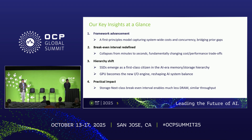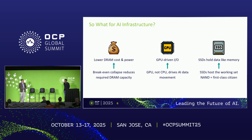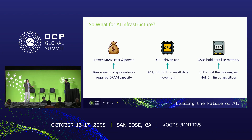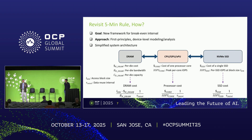Practically, we can achieve the same throughput with much less DRAM. That means lower cost, lower power, and data movement should be managed by the GPU, not the CPU. The SSD behaves more like memory and hosts the active working set. In short, NAND should become a first-class citizen in AI.